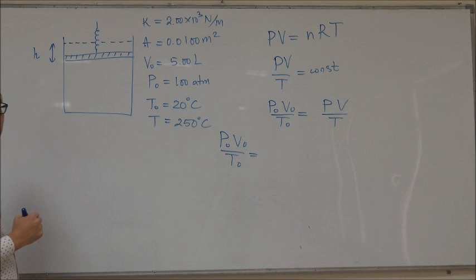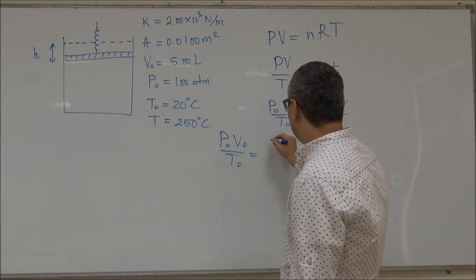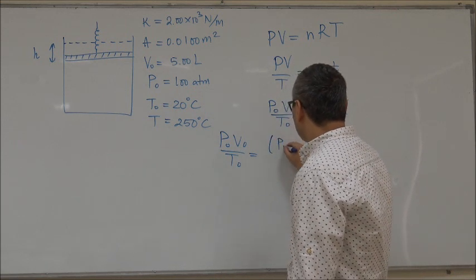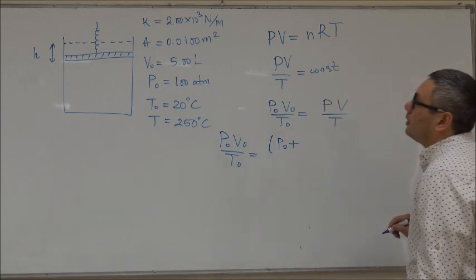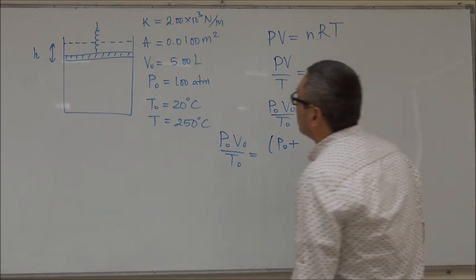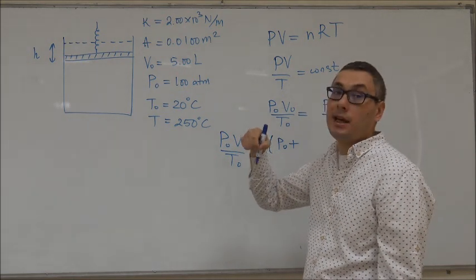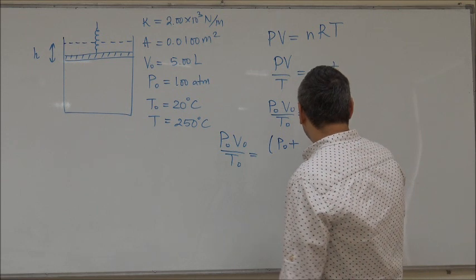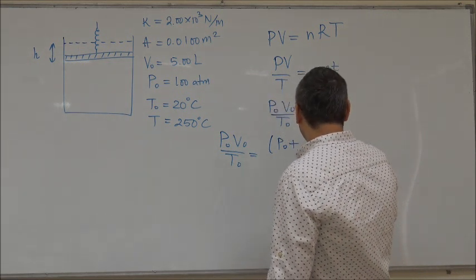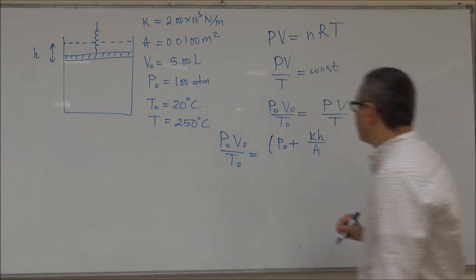So the new pressure would be the original pressure plus that increase. That increase equals the force exerted by the spring, which is KH, divided by the area. So KH over the area - KH is the force, divide the force by the area and you get the pressure.